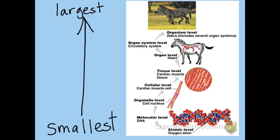This chart shows how at the atomic level, the smallest level, atoms are put together to form molecules. Molecules form organelles. Organelles at the cellular level form cells. Cells form tissues, tissues form organs, organs form organ systems, and all together the organ systems form the organism, such as the zebra in this diagram.